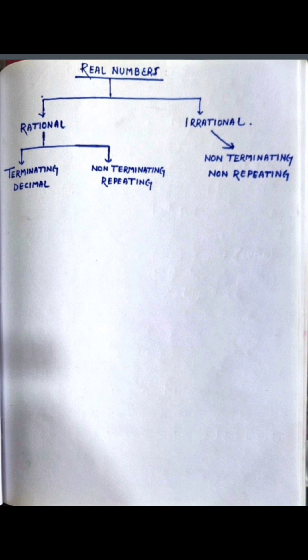Whatever numbers you deal with up to class 10, that is real numbers, whether it is rational or irrational. So in real numbers, there are two categories, one is rational and one is irrational.